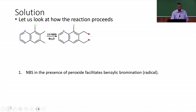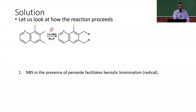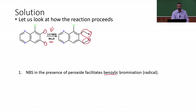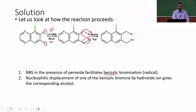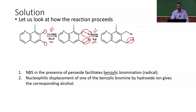In the first step, NBS (N-bromosuccinimide) in two equivalents with benzoyl peroxide is used — this is a radical reaction. NBS is a good reagent for benzylic bromination, and this particular molecule has two benzylic positions (methyl units). Two equivalents of NBS therefore give the corresponding dibromo derivative at both benzylic positions. In the second step, sodium hydroxide replaces one of the bromine atoms by the hydroxide unit via SN2 nucleophilic bimolecular substitution at the benzylic bromine, giving a bromo alcohol.